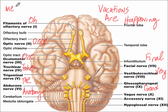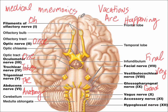You can Google medical mnemonics — just memory tricks — and there are others as well. So 'O once one takes the anatomy final, very good, vacations are happening.' If you can remember that memory trick, you can remember the names of the cranial nerves in order, and then you just have to put the functions with the names.